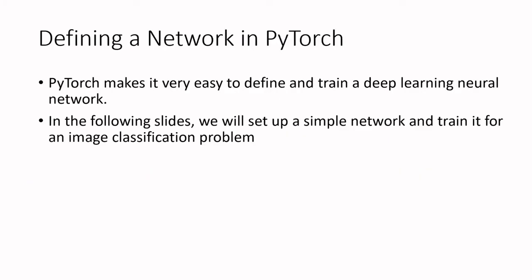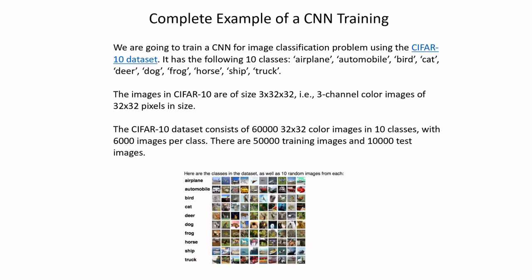Before looking at more modern convolutional neural networks, we will look at how to define and train a network in PyTorch, using an image classification problem. The data will come from a dataset known as CIFAR-10.